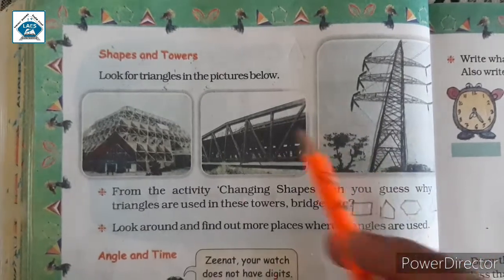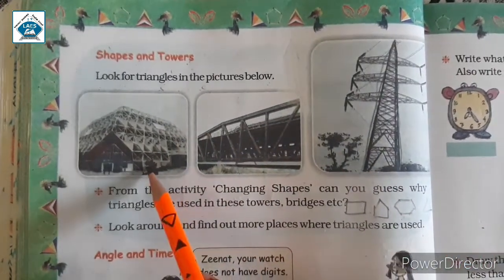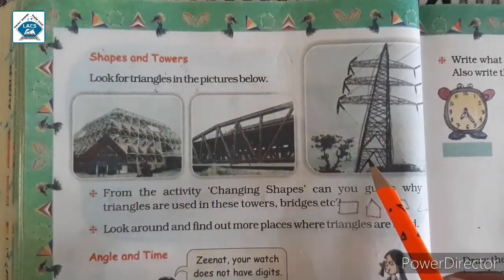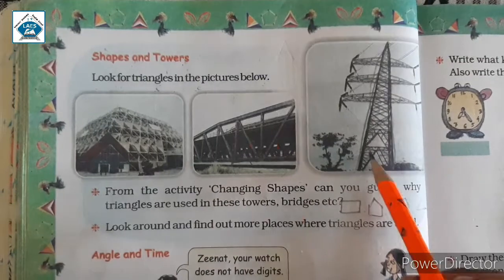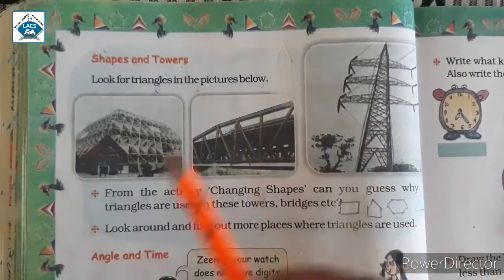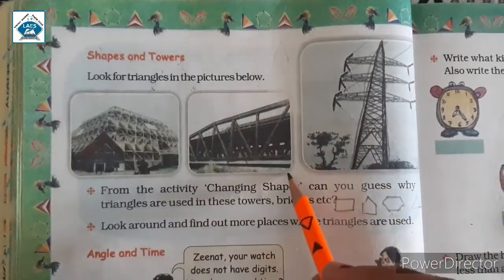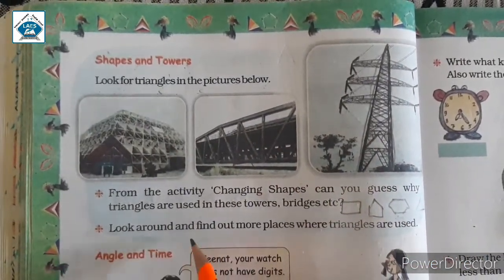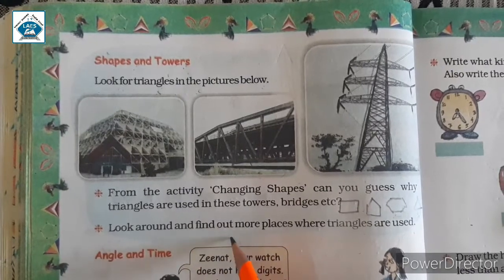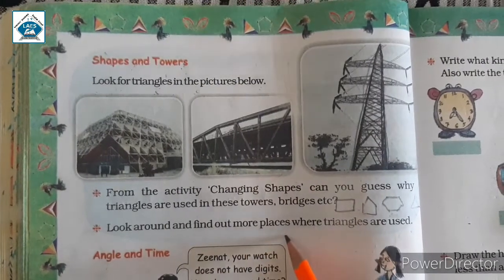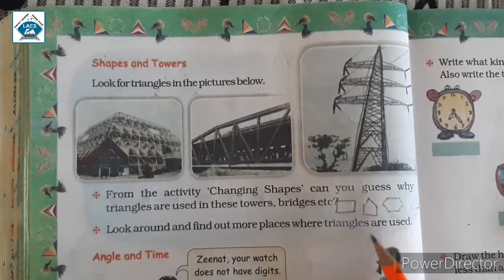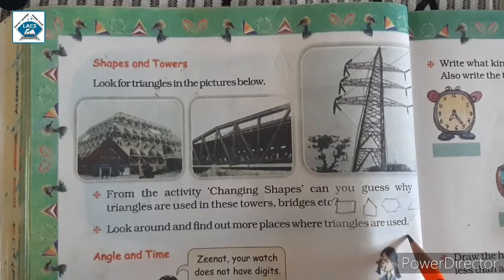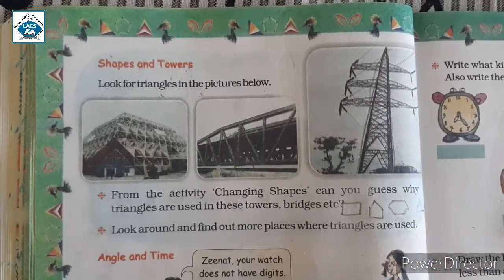Triangle is the strongest polygon. Because it is the strongest polygon, all buildings, bridges and towers are made in triangular shapes. Look around and find out more places where triangles are used. You can find them.